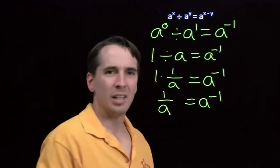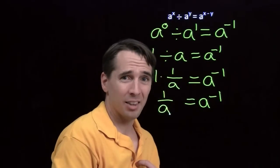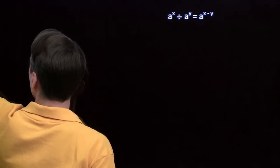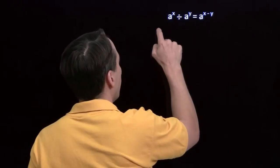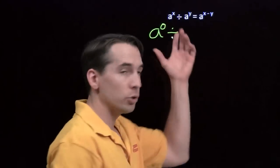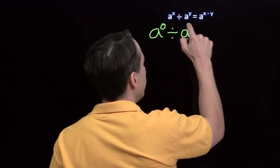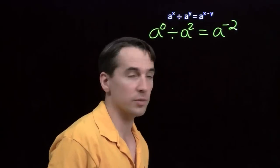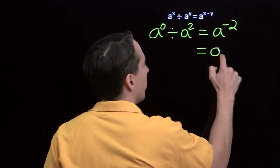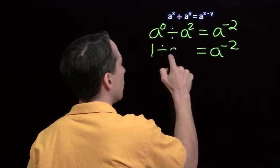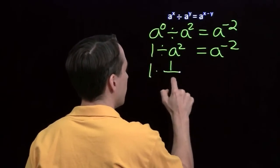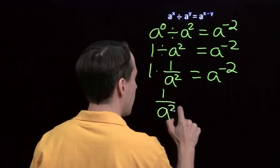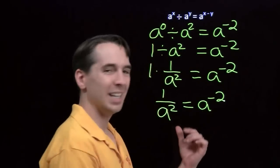But what about raising to the negative 2 power? When I find something that works in math, I like to keep doing it. We'll do the same thing and see what happens when the power is negative 2. We let x be 0 and choose y strategically to get a negative 2 — so we let y be 2. This side comes out to be negative 2, so we're seeing what this exponent law gives us when y is 2 more than x. On the right we'll still have a to the minus 2. A to the 0 is still 1. Dividing by a squared is the same as multiplying by the reciprocal of a squared. Multiplying by 1 gives you back what you started with, and we see that a to the negative 2 is the reciprocal of a squared.